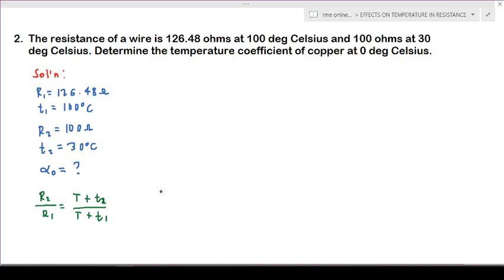So we'll just substitute our given values. Let's do that on this side. We have our R2, which is equal to 100 ohms, over our R1, which is 126.48 ohms. This is equal to T, which is what we are trying to get, plus our t2, which is 30 degrees Celsius, over T plus t1, which is 100 degrees Celsius.